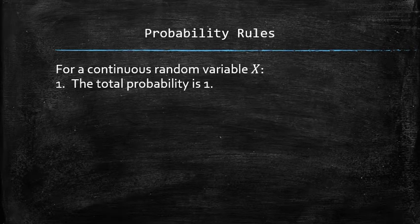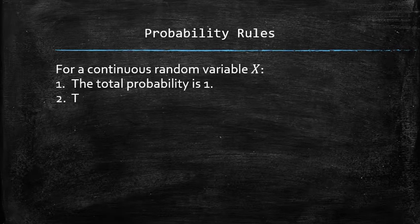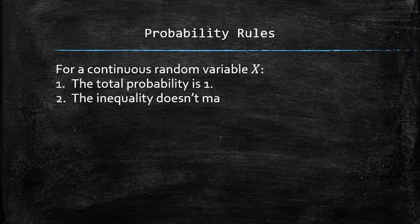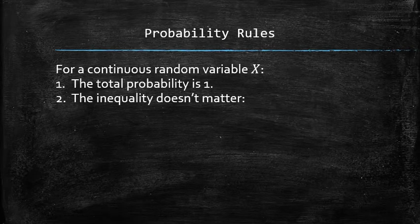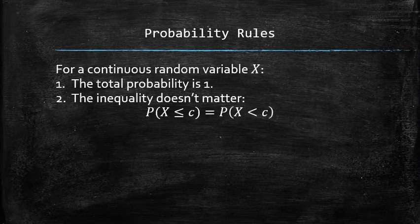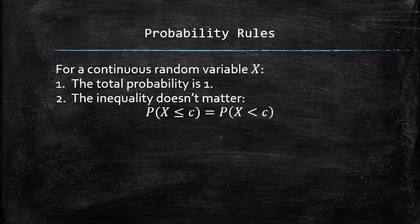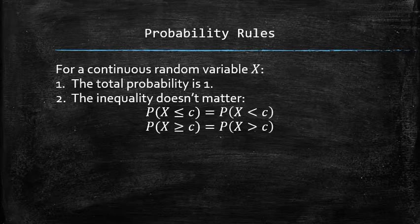The second probability rule for continuous random variables states that the inequality doesn't matter. In other words, the probability of x being less than a number is the same as the probability of x being less than or equal to that same number. The same holds for a greater than inequality and two-sided inequalities.